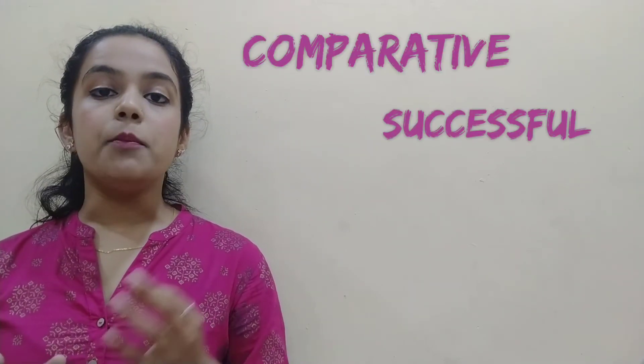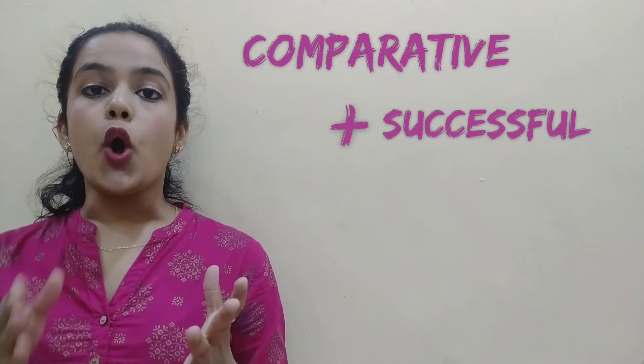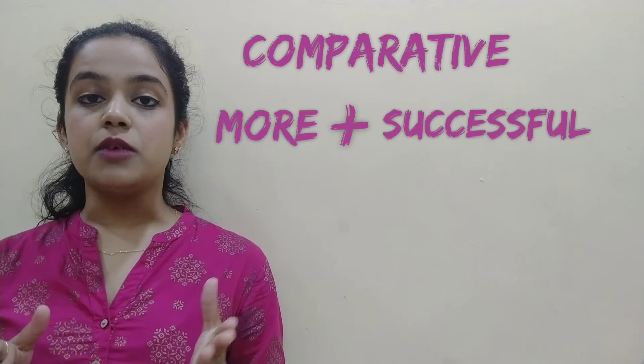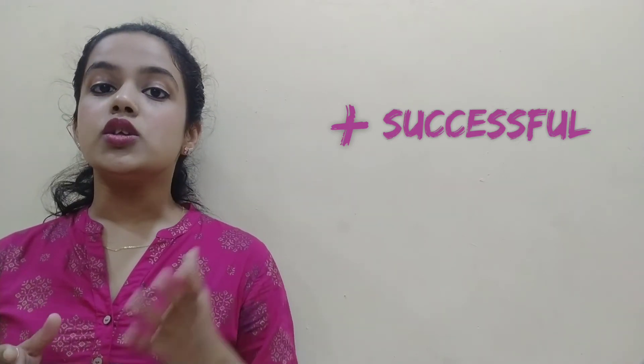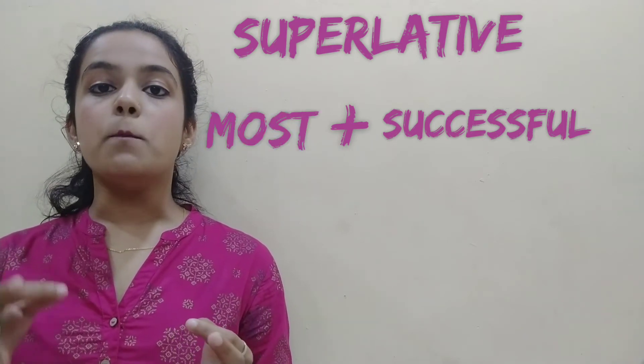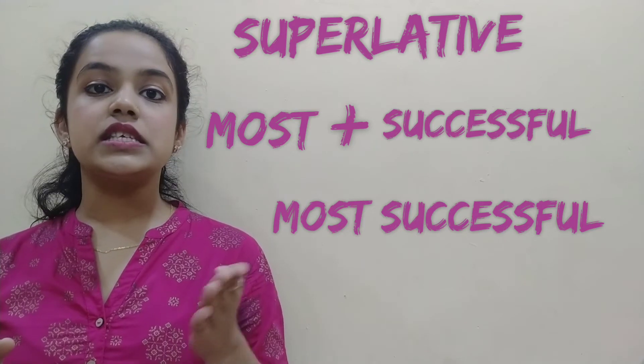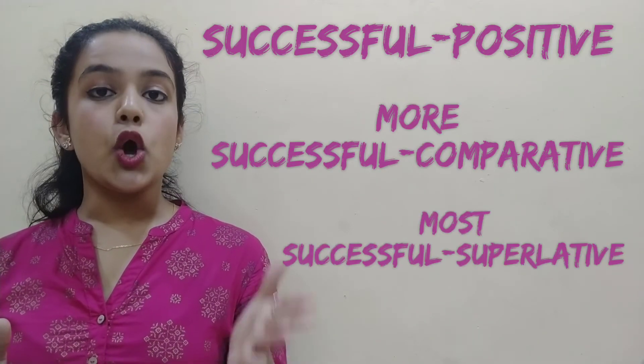Rule number five: if your adjective has three syllables or two syllables, add 'more' and 'most' before the positive form. For example, the word 'successful' — to convert to comparative degree, add 'more' before it: 'more successful'. To convert to superlative degree, add 'most': 'most successful'. So: 'successful' — positive, 'more successful' — comparative, 'most successful' — superlative.